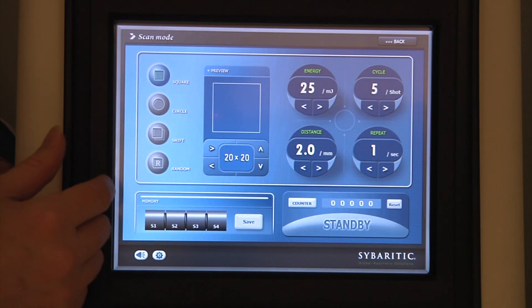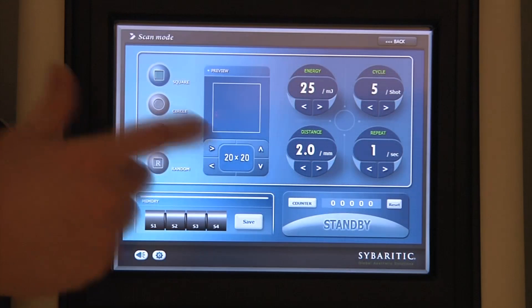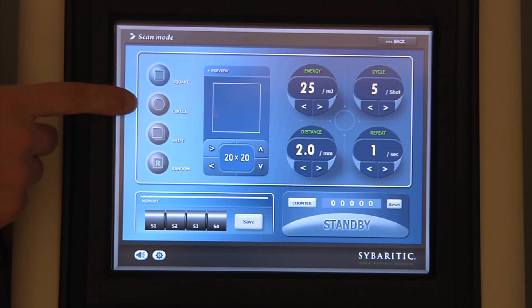However, we can independently control the dimensions to create rectangles and other shapes. We can also select a circle if that's the spot area that's desired.